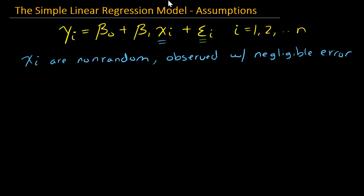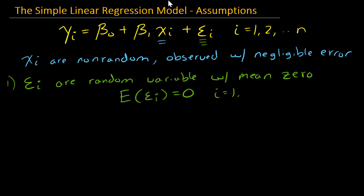The next set of assumptions that I have are regarding this error term, this model error. My assumptions for the model error - I actually have three of them. The first assumption is that these epsilon sub i, first off, they are random variables with mean zero. So if I were to write that, that means that basically the expected value of epsilon sub i equals zero for all i. So that's the first assumption for epsilon.